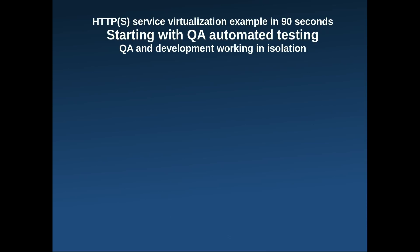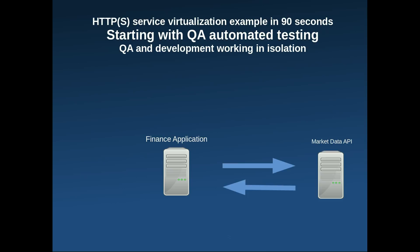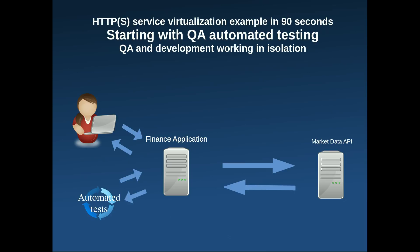In this example, we will be testing a finance application which is connecting to a third-party API. The manual exploratory testing plan is executed before every release. There is also a new suite of automated tests being developed. To avoid problems with a third-party API and also test the finance application in hypothetical situations, we will simulate the third-party API behavior with virtual services or stubs.